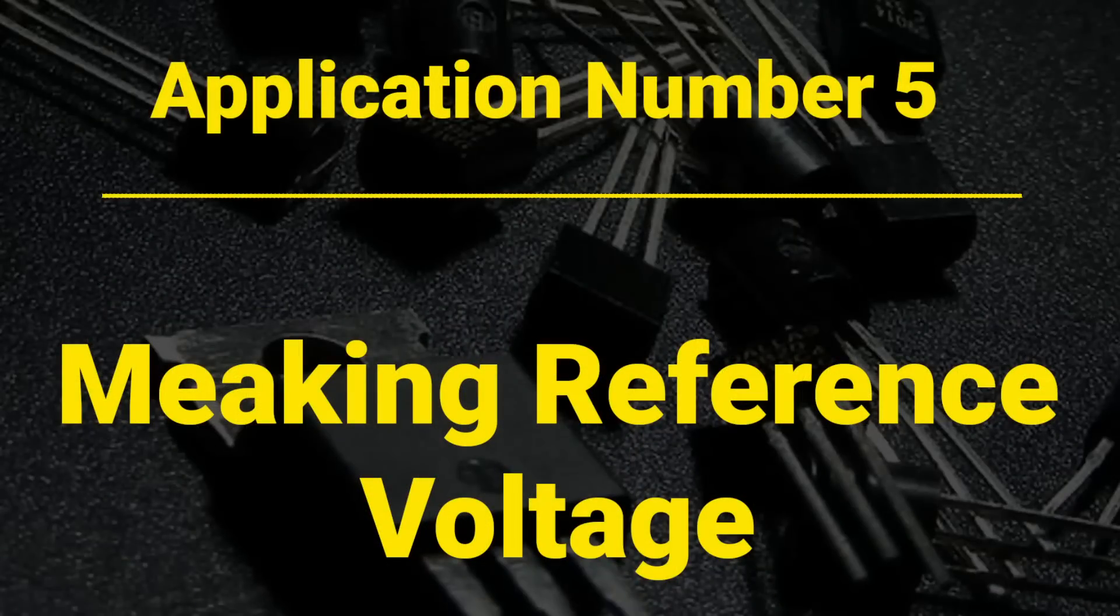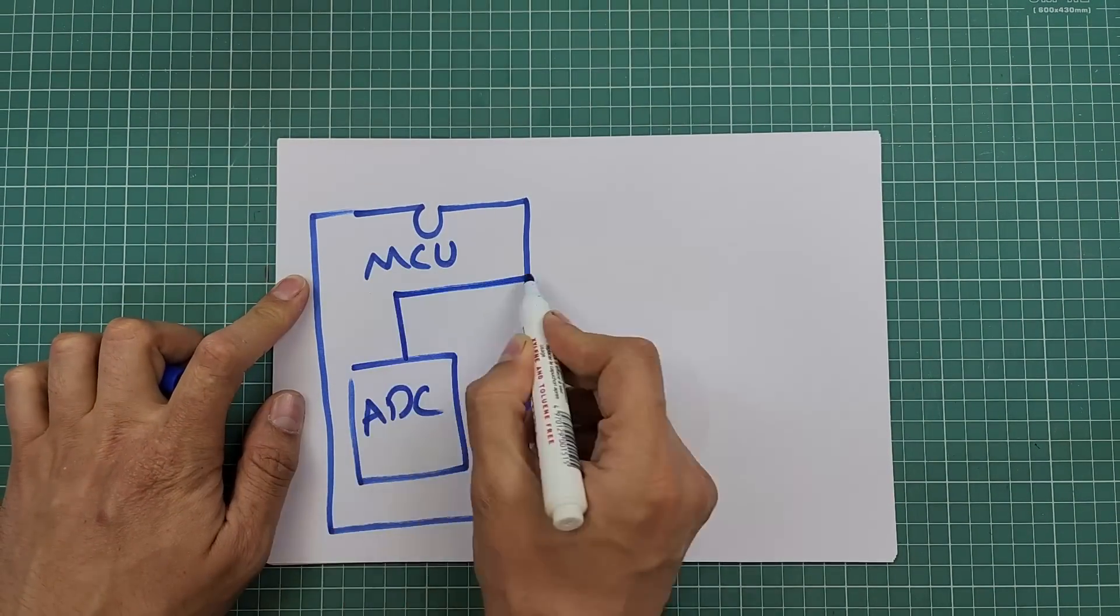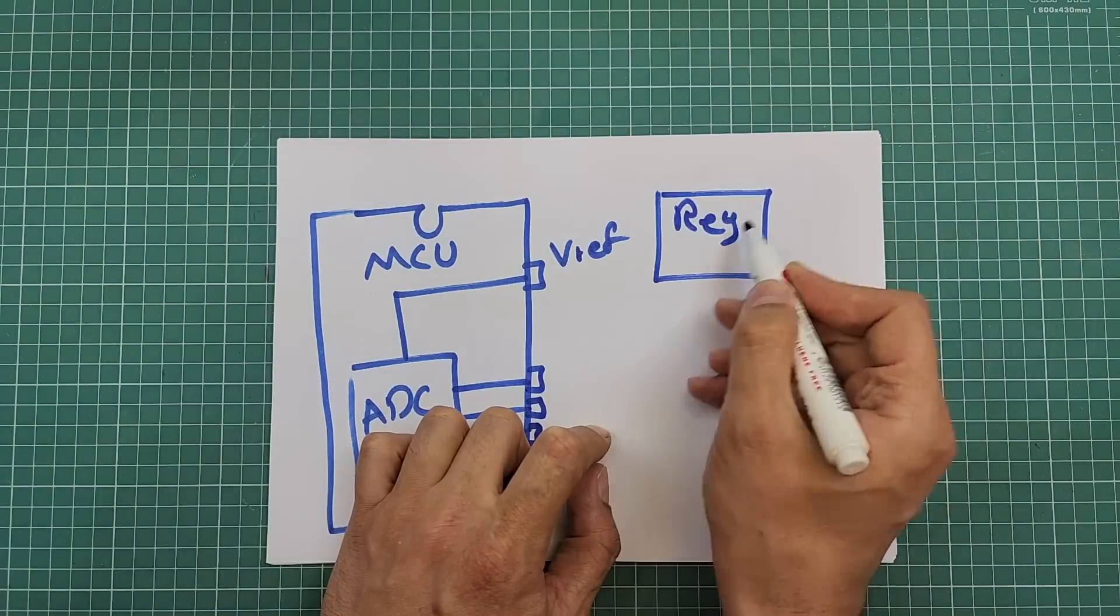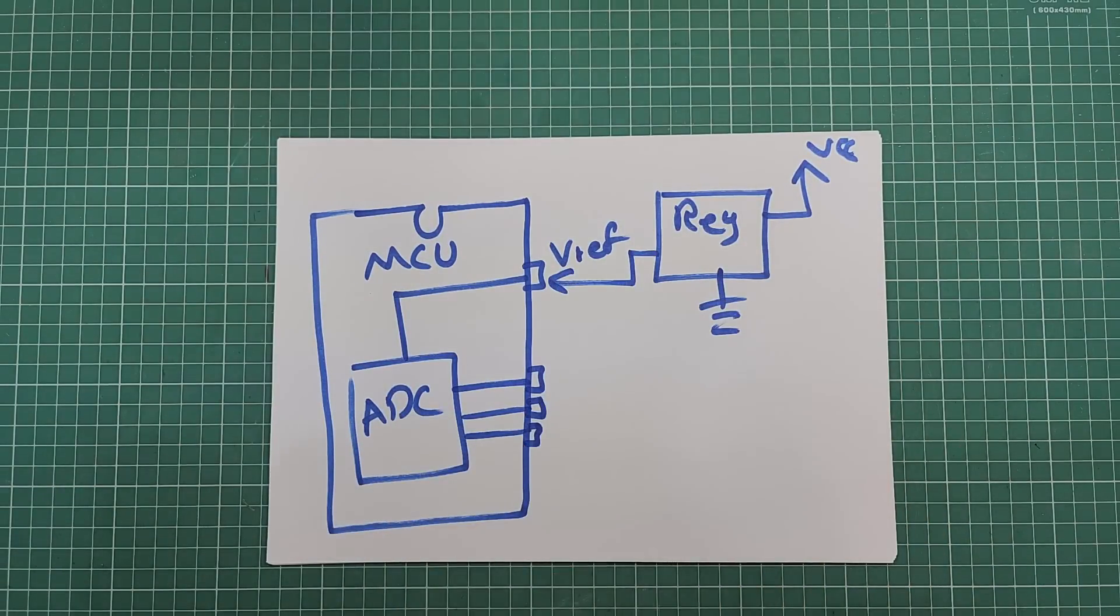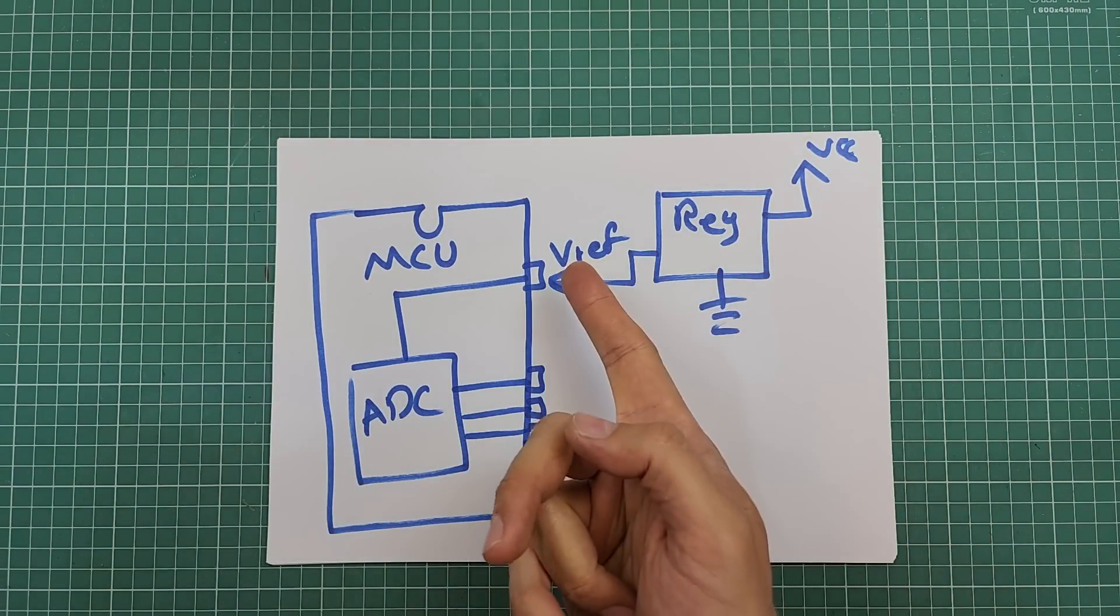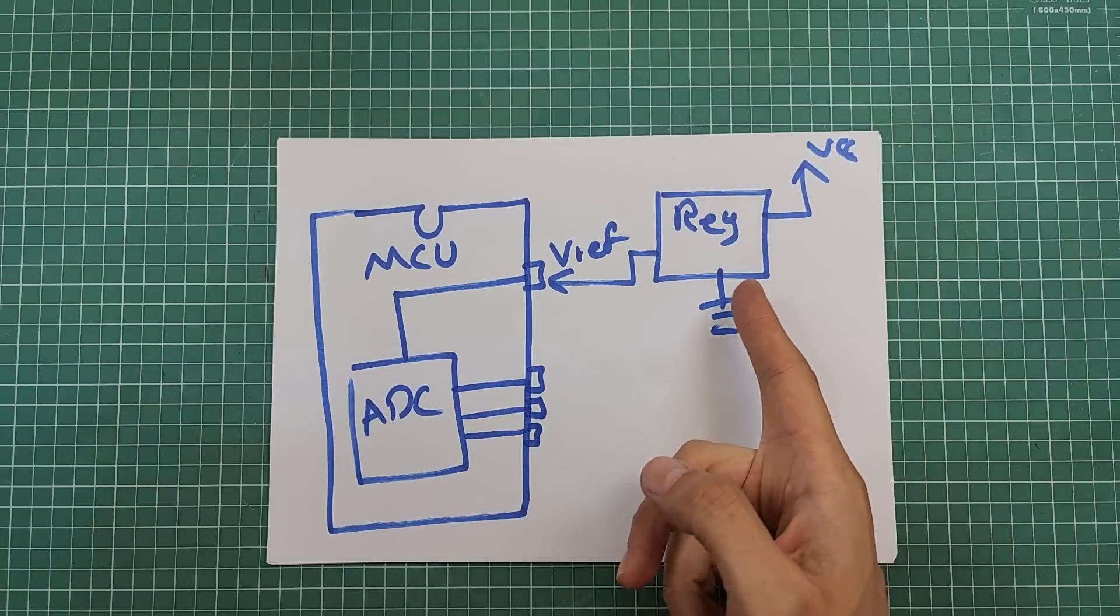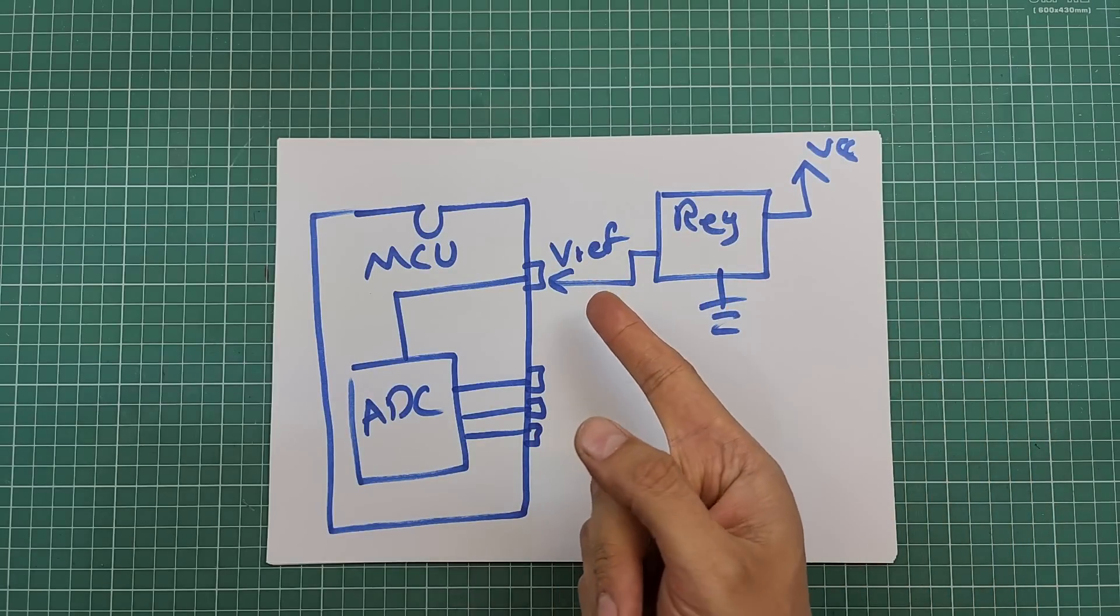Now you got the point, right? The reference voltage is a key parameter in calculating the digital value, so we have to supply a steady and stable value as the reference voltage. Application number five: making reference voltages.